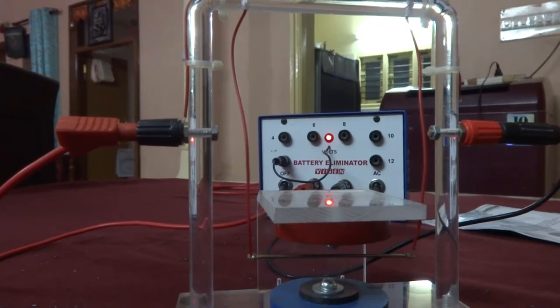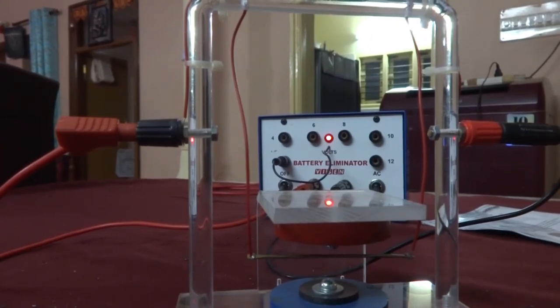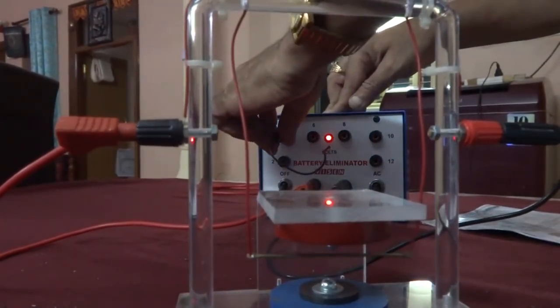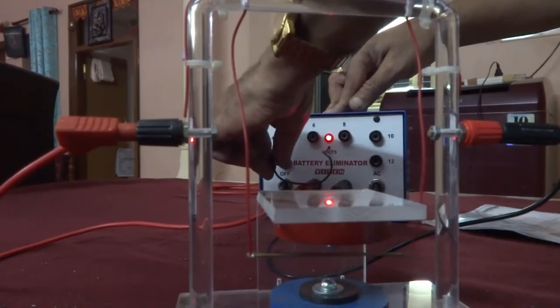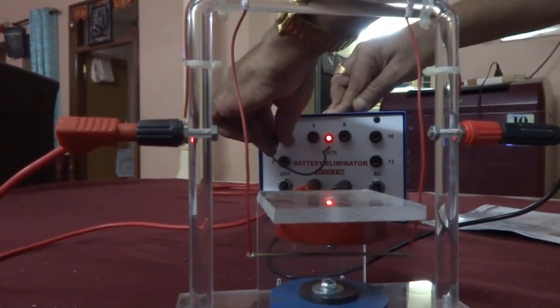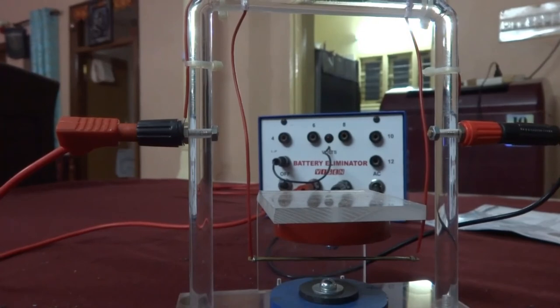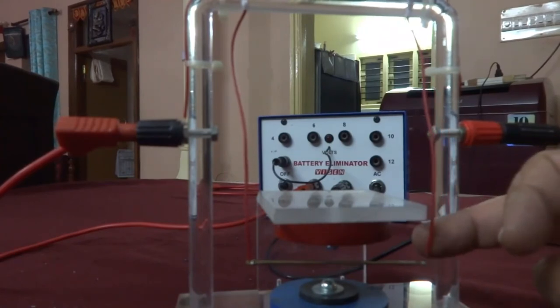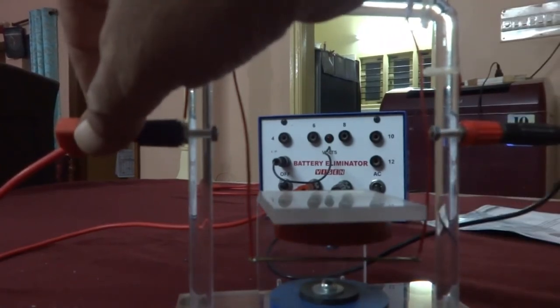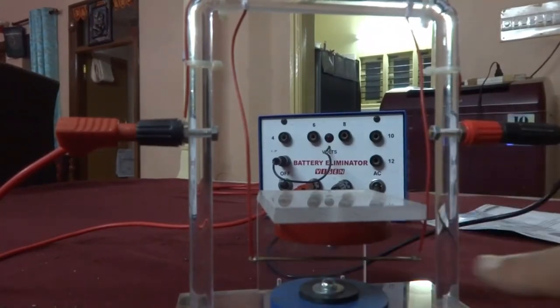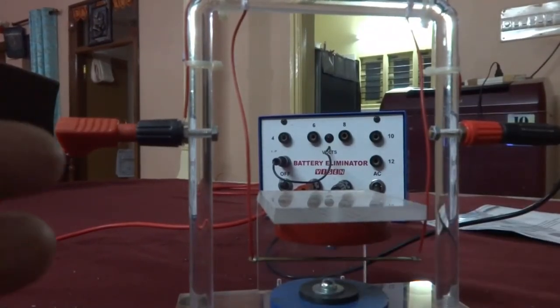So now I have allowed a potential difference of two volts. If I keep it four volts, then you will see that the deflection will be more. Now you can find out in which direction it moves, whether it goes inward or it comes outward. So now I have connected this positive terminal and this negative terminal. Therefore the current passing through this is in this direction, so from your left to your right.